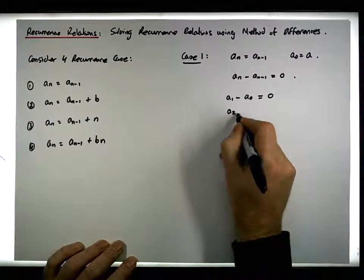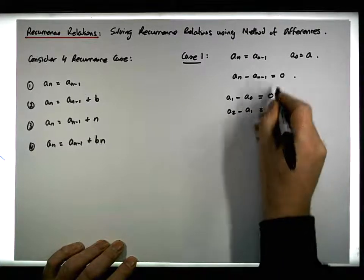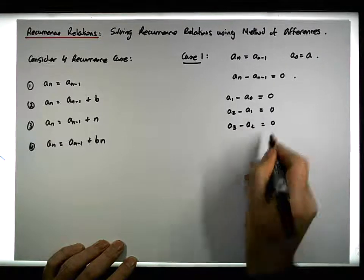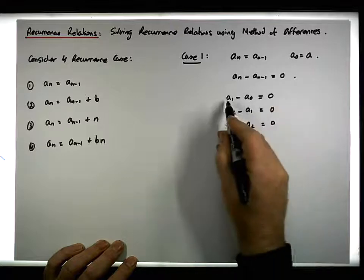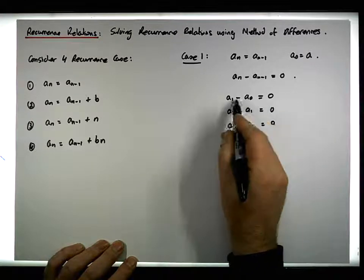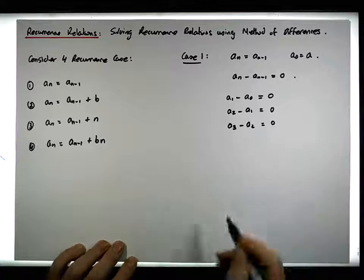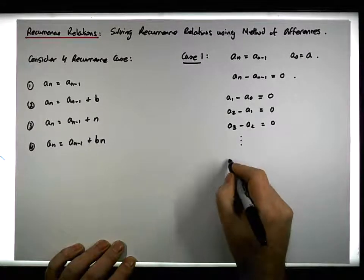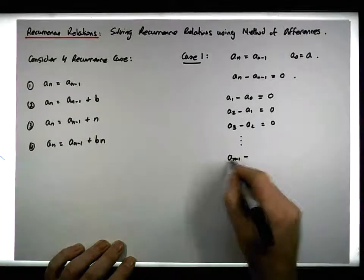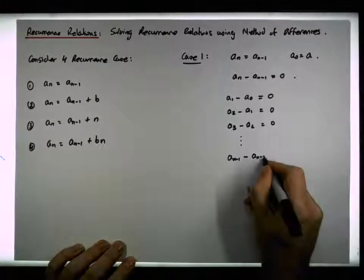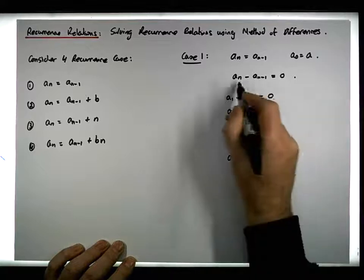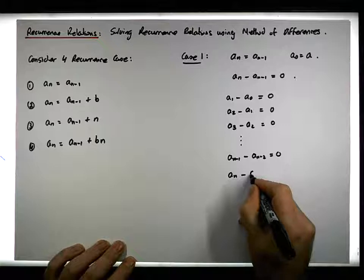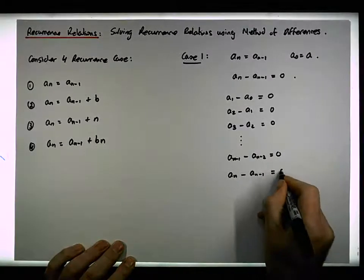Then a(2) minus a(1) must also equal zero. a(3) minus a(2) must also equal zero. So the difference between consecutive terms is zero — this is a constant sequence. Continuing all the way to a(n-1) minus a(n-2) equals zero, and then a(n) minus a(n-1) equals zero.